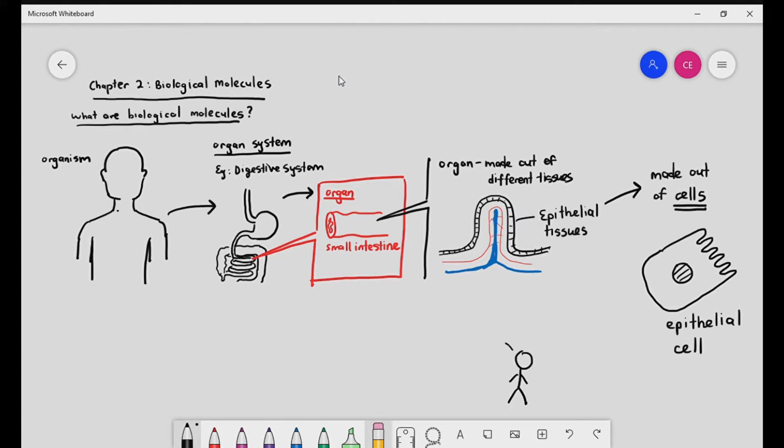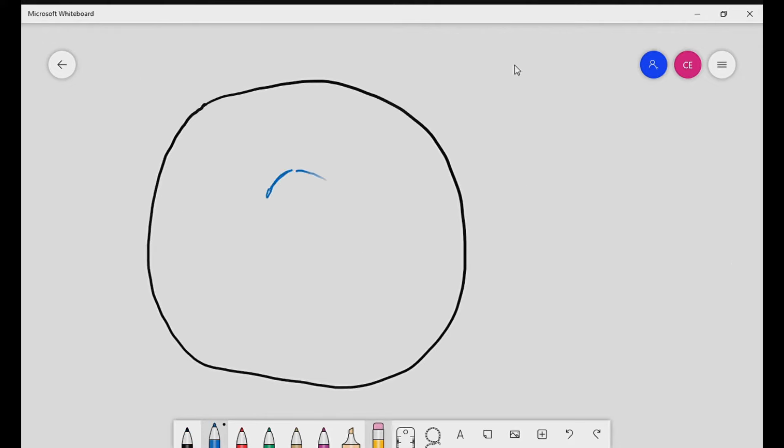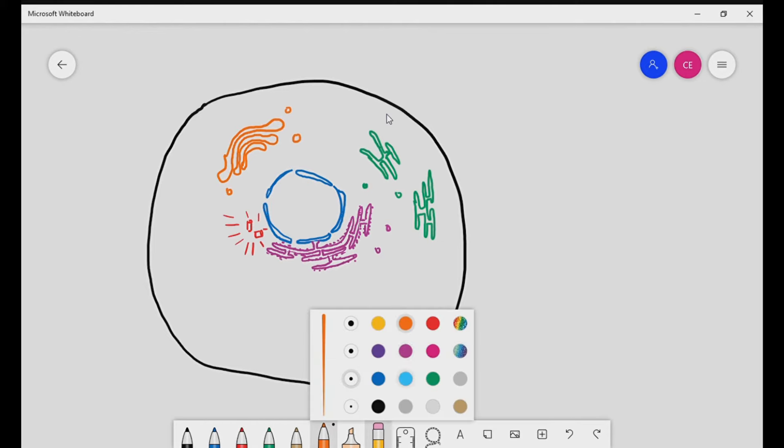Now comes the most important question for this particular chapter. What are cells made out of? You see, the cell itself is actually a living unit. But here's where it becomes a little bit odd.